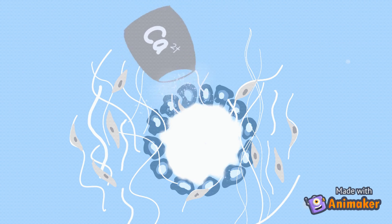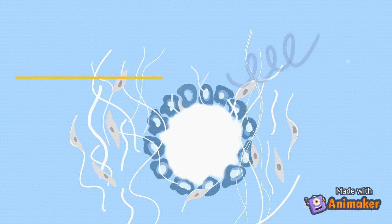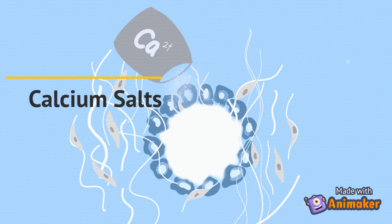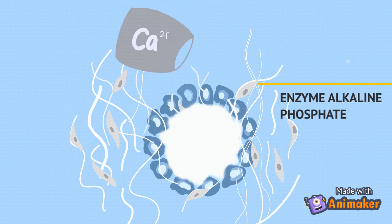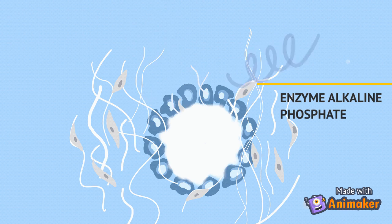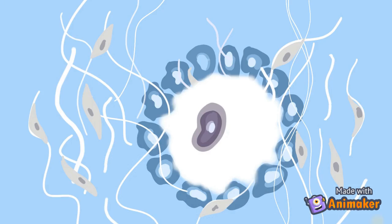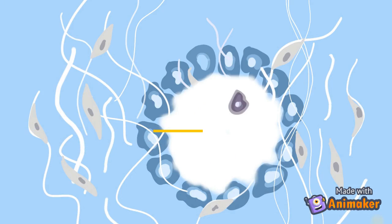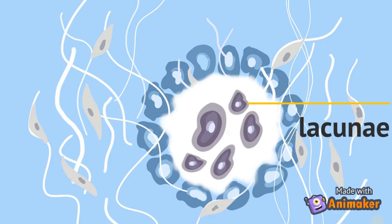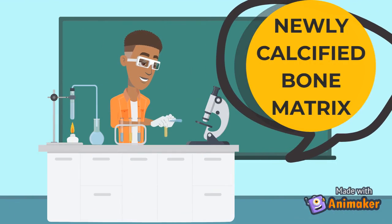The bone matrix begins to calcify when calcium salts and the enzyme alkaline phosphatase are added into it. After that, osteoblasts and osteoids differentiate into mature osteocytes. These osteocytes are now housed inside little areas called lacunae. Thus the newly calcified bone matrix is formed.